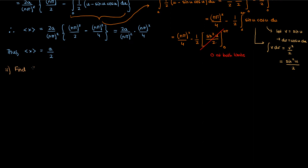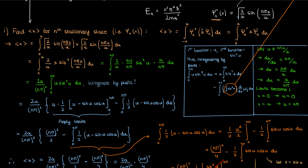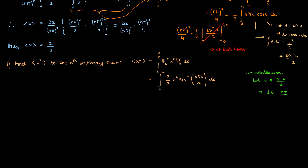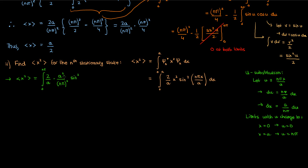Next, we'll find the expectation value of x² for the nth stationary state using the same logic. I've already written x-hat as x and simplified the integration limits to 0 and a. Substituting psi_n and its conjugate (same as psi_n, no imaginary components), I simplify and make the same u-substitution — u = nπx/a — so the limits become 0 and nπ. Now with x² in the integral, the u-substitution gives the following expression.